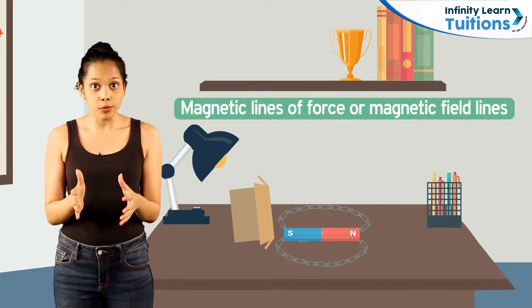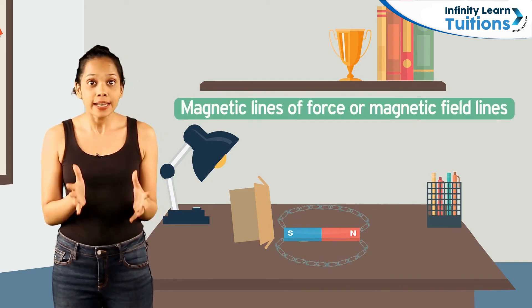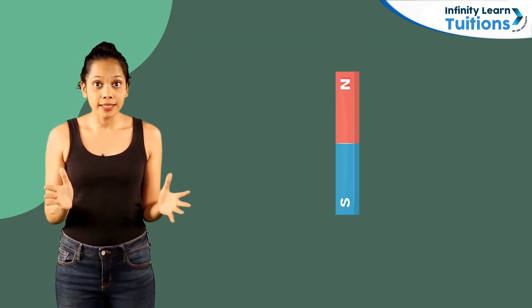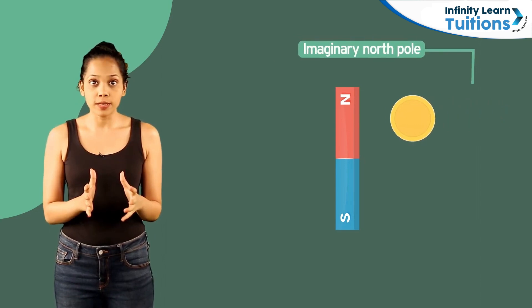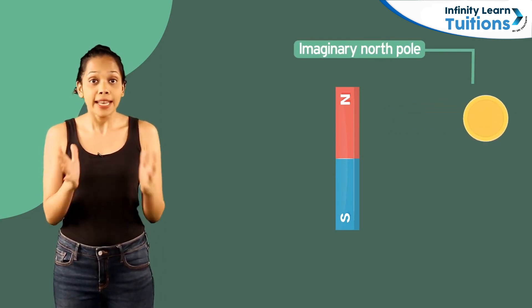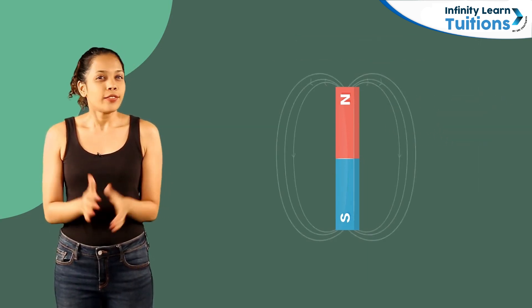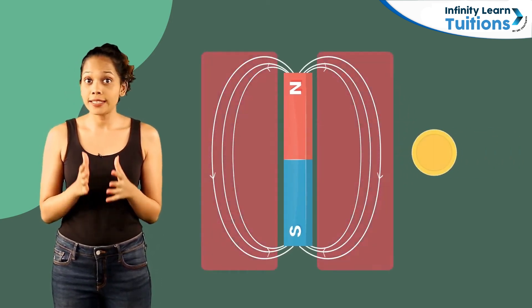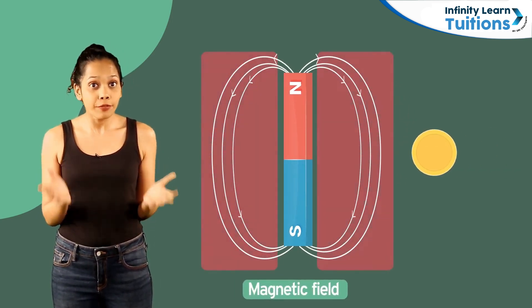These lines are known as magnetic lines of force or magnetic field lines. Do you know what caused these lines to form? All magnets exert a certain force on other magnets and magnetic materials. The region around the magnet where it exerts this force is known as its magnetic field.